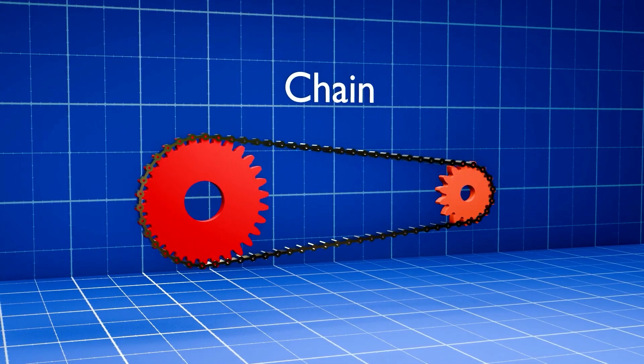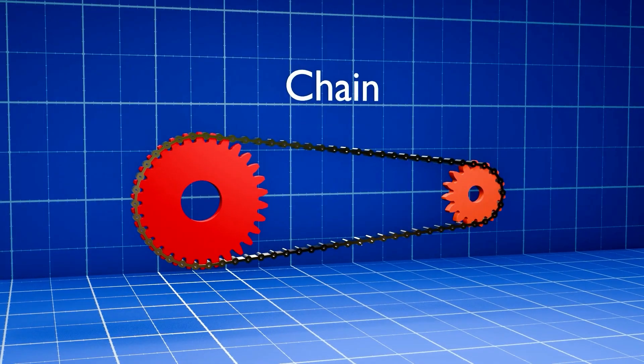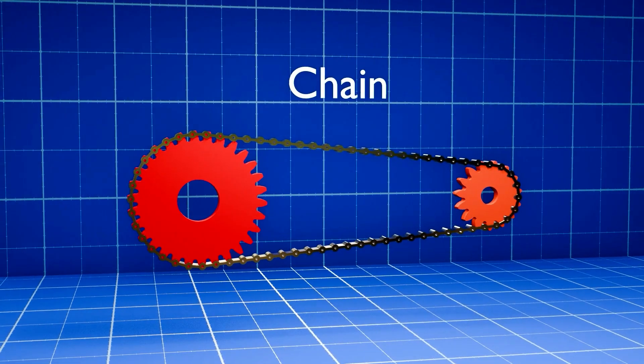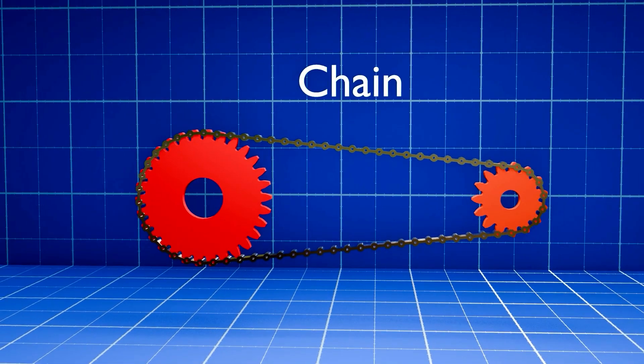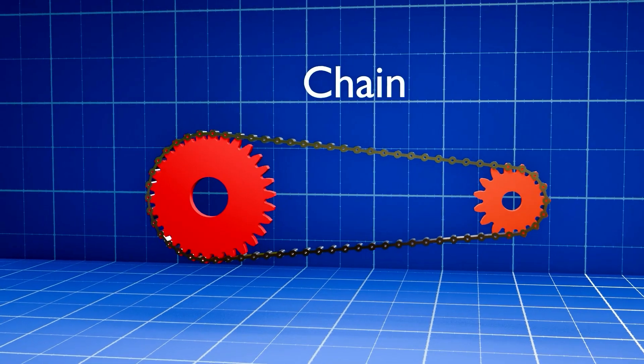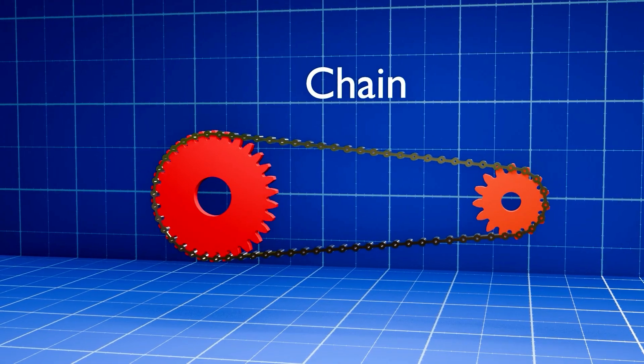Chains work by transferring power through a series of interconnected links that engage with sprockets. They provide a more secure drive than belts, reducing the risk of slippage, and are suitable for intermediate distances.